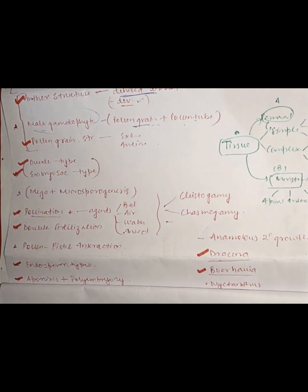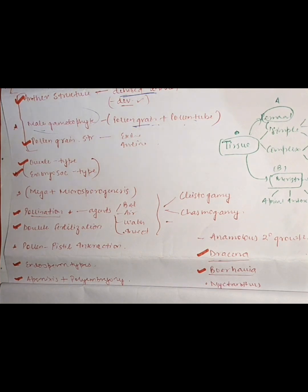After this, we have endosperm types. You need to know about the endosperm types — what are the three types of endosperm, what is the development of their cells, what is the structure of the cells, and what cells are present in endosperm.